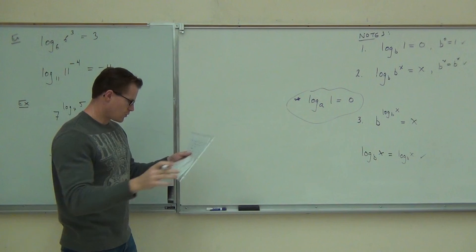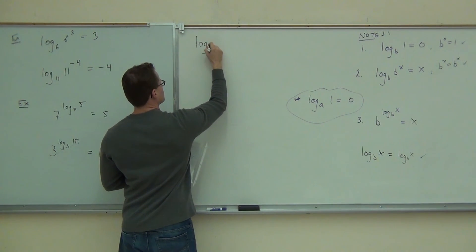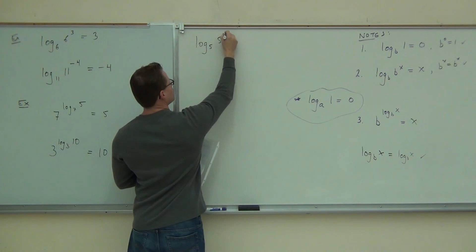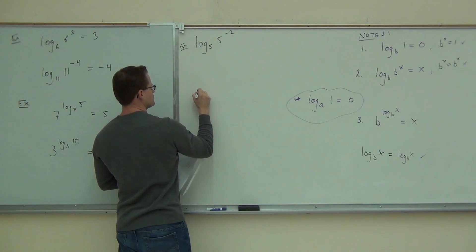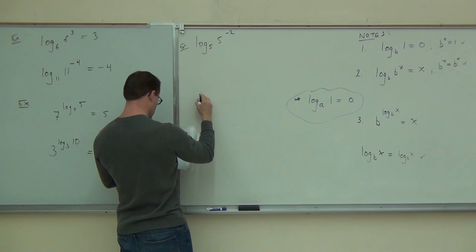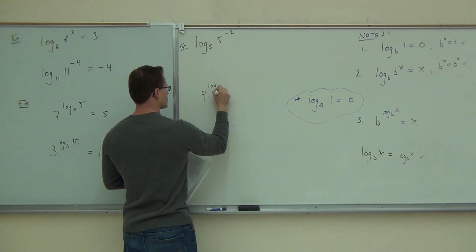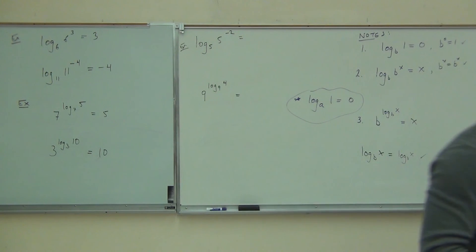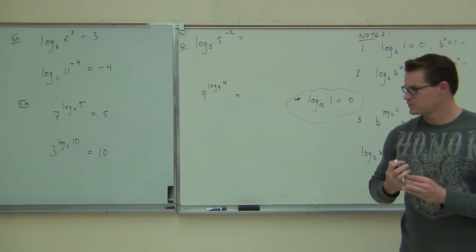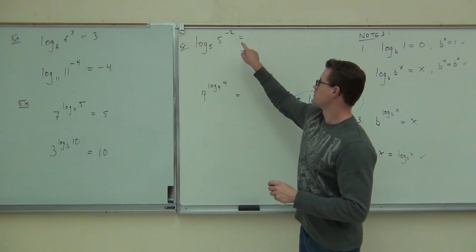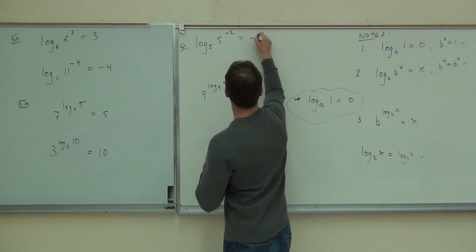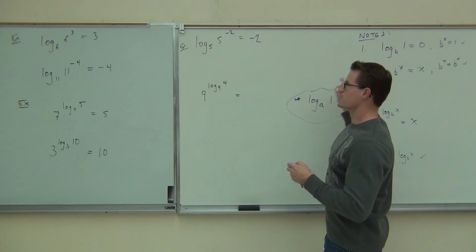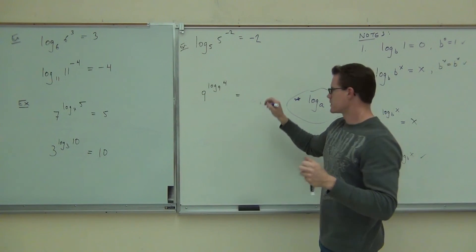Try a couple of these on your own, and then we'll continue. Let's do log base 5 of 5 to the negative 2, log to the log base 9. How much is this one? 18. Why? Because of that property right there. Because of that one. We know that those exponents would have to be the same. How about this one? 4. Nice. Exactly right.